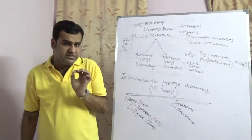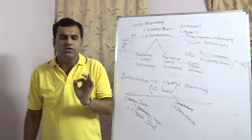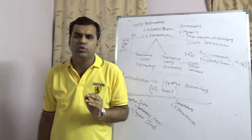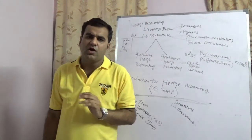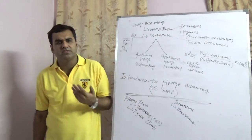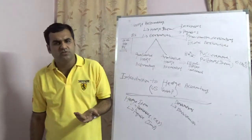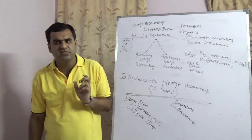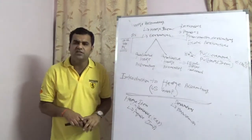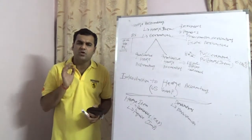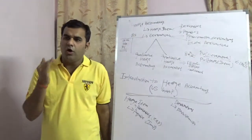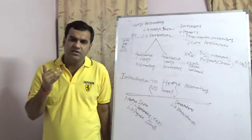As per US GAAP, it is mandatory to do hedge accounting at least once per quarter. There is no restriction on doing it monthly or semi-monthly — but it must be done at minimum at the end of each quarter. Finally, hedge accounting covers all three forms of hedging: cash flow hedges, fair value hedges, and net investment hedges.